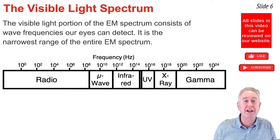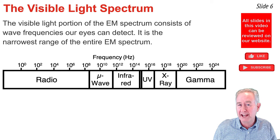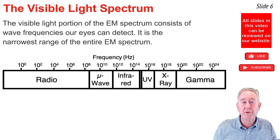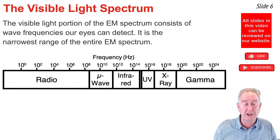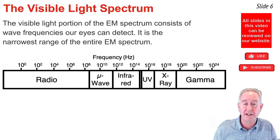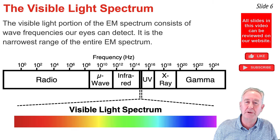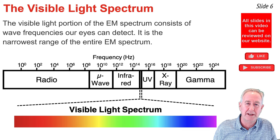Amidst this vast range of frequencies, there's a tiny sliver of frequencies that the human eye is sensitive to. We refer to this region as the visible light region, and it's found wedged in between the infrared and the ultraviolet regions of the electromagnetic spectrum.